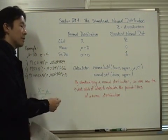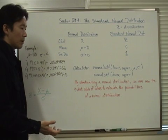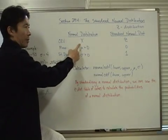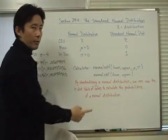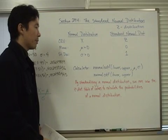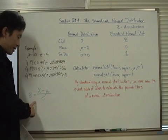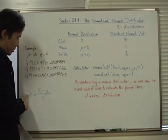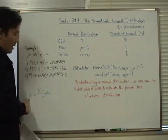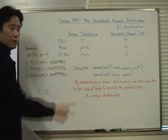Remember, in the previous section I asked: how do you actually do this if you don't have a calculator? We still need the table of values, but you need to convert your normal distribution variable to a standard normal distribution variable first, before you can use the Z distribution table of values to calculate probabilities. The key conversion formula is: Z equals X minus the mean, divided by the standard deviation of your normal distribution curve.